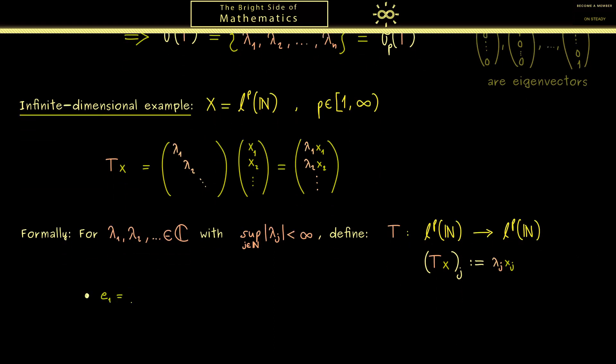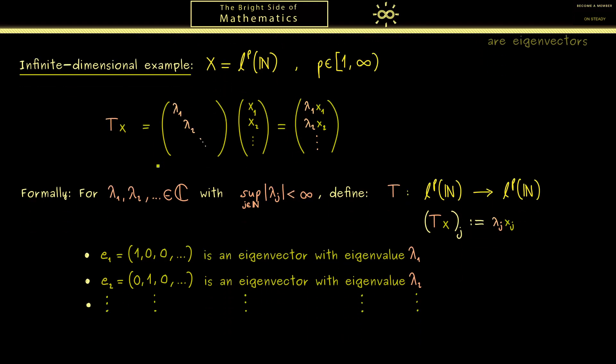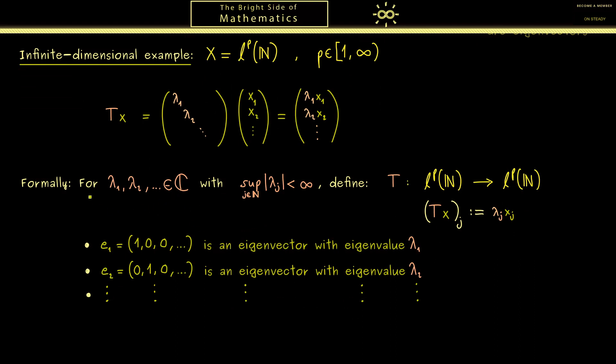For example e₁, the sequence 1, 0, 0 and so on, is an eigenvector corresponding to the eigenvalue lambda₁. Of course in the same way we have e₂ with 1 at the second position as an eigenvector with corresponding eigenvalue lambda₂. Hence you see we continue this for all our lambdas.